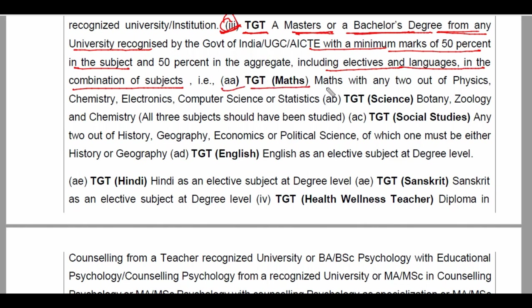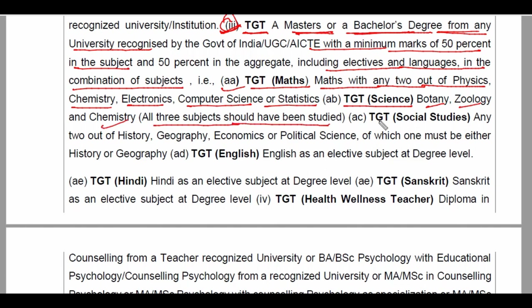TGT Maths के लिए mention किया गया है: Maths with any two of Physics, Chemistry, Electronics, Computer Science, or Statistics। Science में mention किया गया है: Botany, Geology, Chemistry — all three subjects should have been studied।